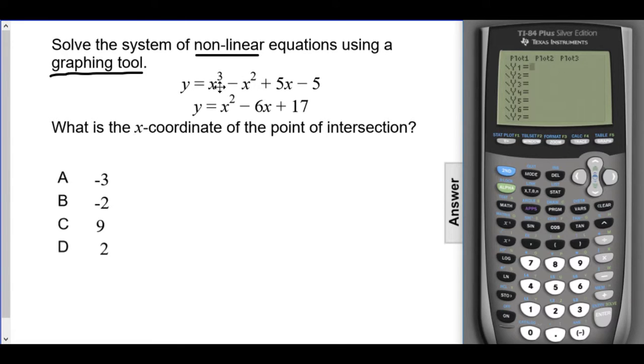These two equations have exponents, so we're going to have to use what's called the caret button. It looks like this little up arrow right under the clear button. So x to the third will be x carat 3 minus x carat 2 plus 5x minus 5.